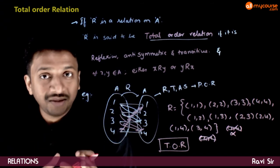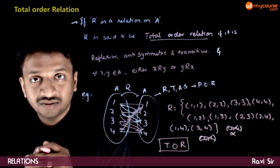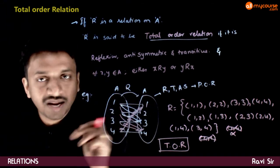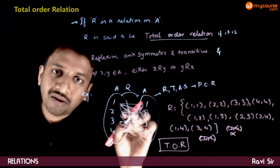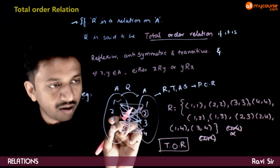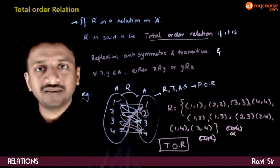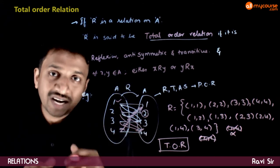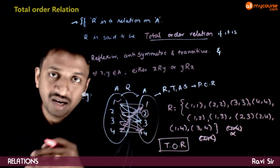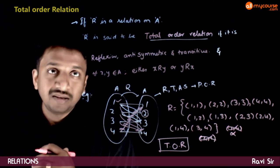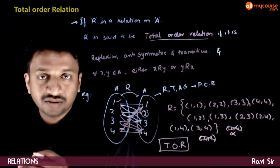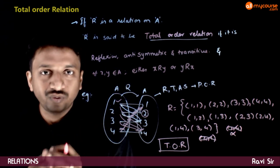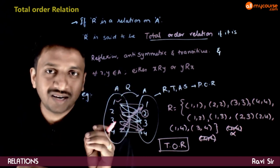We should also understand why this name is logical. Total order means the relative order of the element and its image. Here, as you can see, the image is always greater than or equal to the element — you cannot go in the reverse order. In every total order relation, either all images will be greater than or equal to the elements, or less than or equal to the elements. That is, you follow a particular order. I hope you understand all the different types of relations. Now let us take some examples to understand how we prove or disprove that relations satisfy certain types.